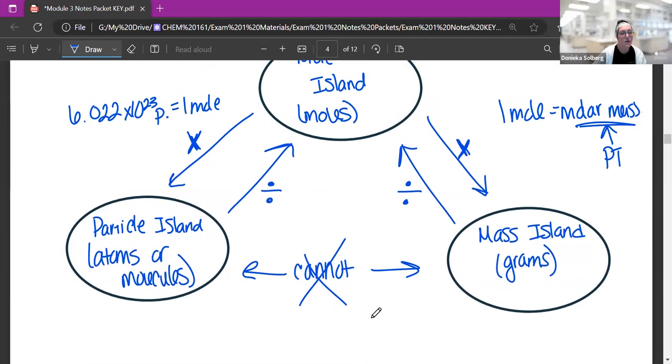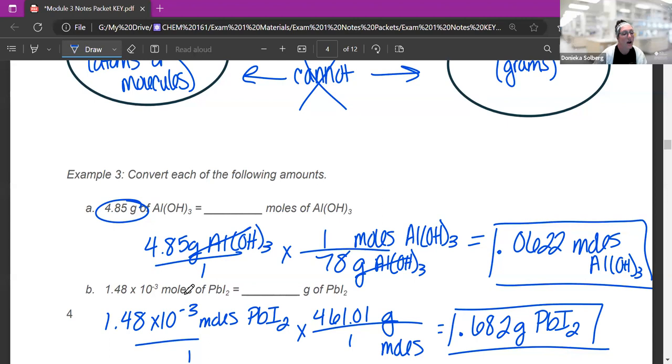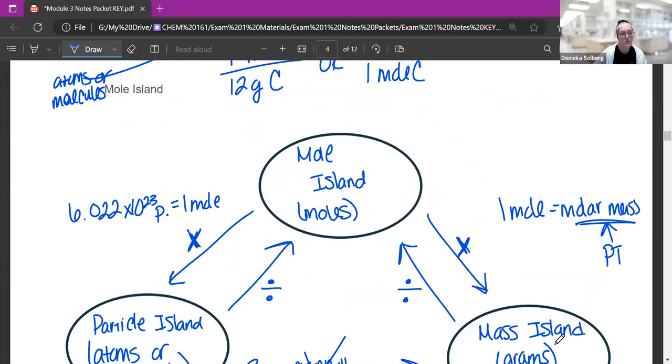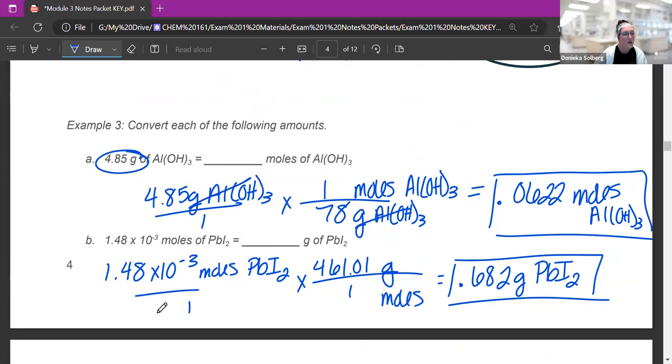Now you could have also done that by looking here and you're like, oh, I have grams, I want moles. So I'm going from grams to moles. I need to divide by the molar mass. Also fine. But when it starts getting to be multi-step, that can be a little difficult. Here I've got moles of PbI2 or lead iodide and I want grams. So I want grams. I have moles. We're starting with moles. We're going to grams means I need to multiply by whatever the molar mass of that thing is. So I start with my number from the problem, 1.48 times 10 to the negative third moles of PbI2. So I need moles down here. And the molar mass of one mole of PbI2, when I add them all up, is 461.01 grams. So I'm just going to do this times this and I get 0.682 grams of PbI2.